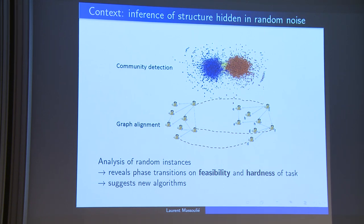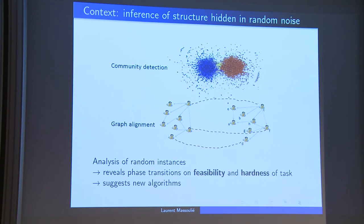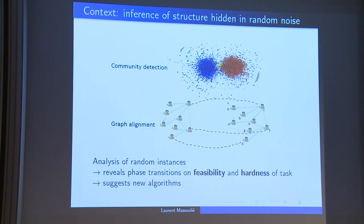A second inference problem is graph alignment: given two graphs, find a mapping of the vertices in one graph to the vertices in the other so that you have more or less a graph isomorphism. For instance, you can have a graph representing the interactions of users of one online social network where identities are revealed, and another graph for a second network where identities are not revealed. If you can find the isomorphism, you can de-anonymize the second graph.